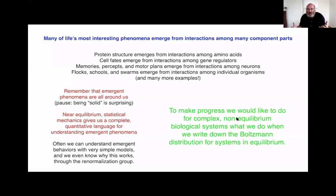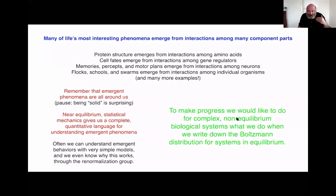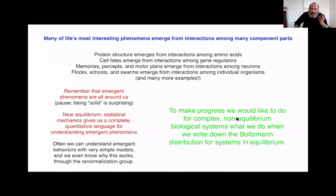As most of you know from your physics courses, if we're near thermal equilibrium, statistical mechanics gives us a very precise and quantitative language for describing these emergent phenomena. We can make quantitative predictions about the behaviors of real materials, and often we can succeed even using relatively simplified models to describe them. Importantly, we understand why those simple models work - it's not just that we got lucky.